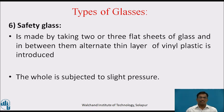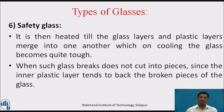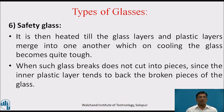Safety glasses are made by taking two or three flat sheets of glass with alternate thin layers of vinyl plastic introduced in between them. The whole content is subjected to slight pressure. It is then heated till the glass layers and plastic layers merge into one another, which on cooling makes the glass quite tough. When such glass breaks, it does not cut into pieces since the inner plastic layer tends to back the broken pieces of glass.